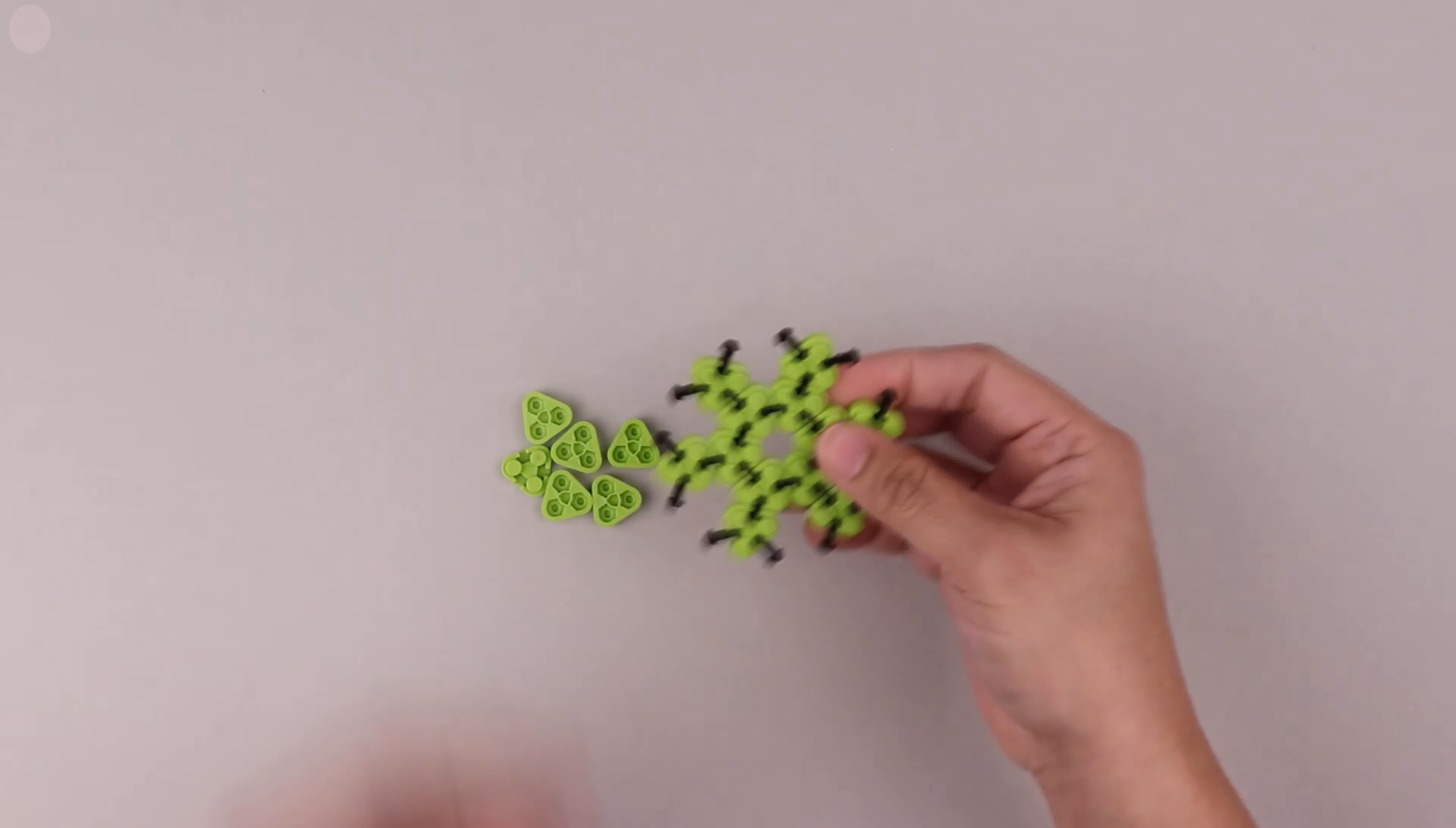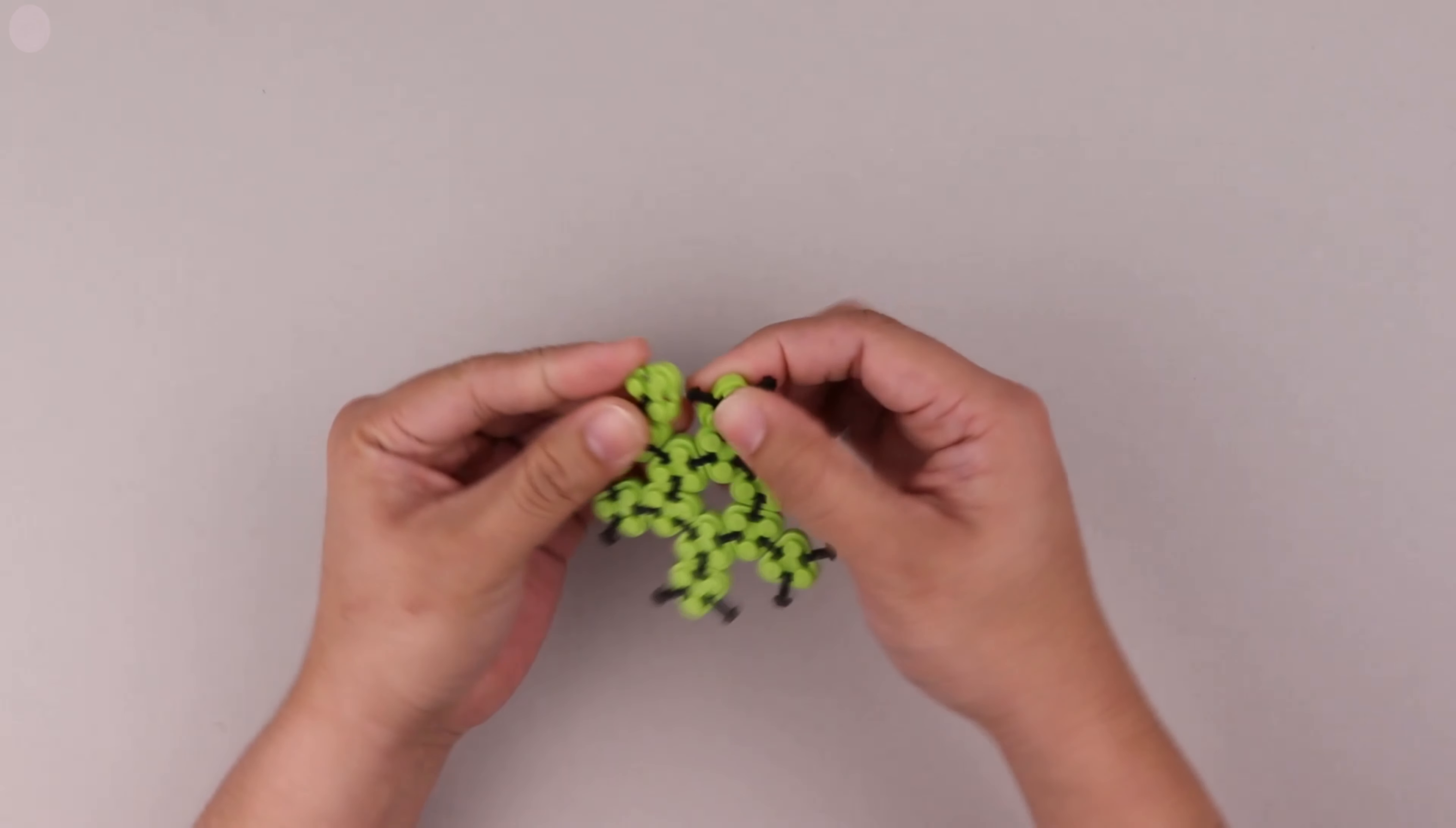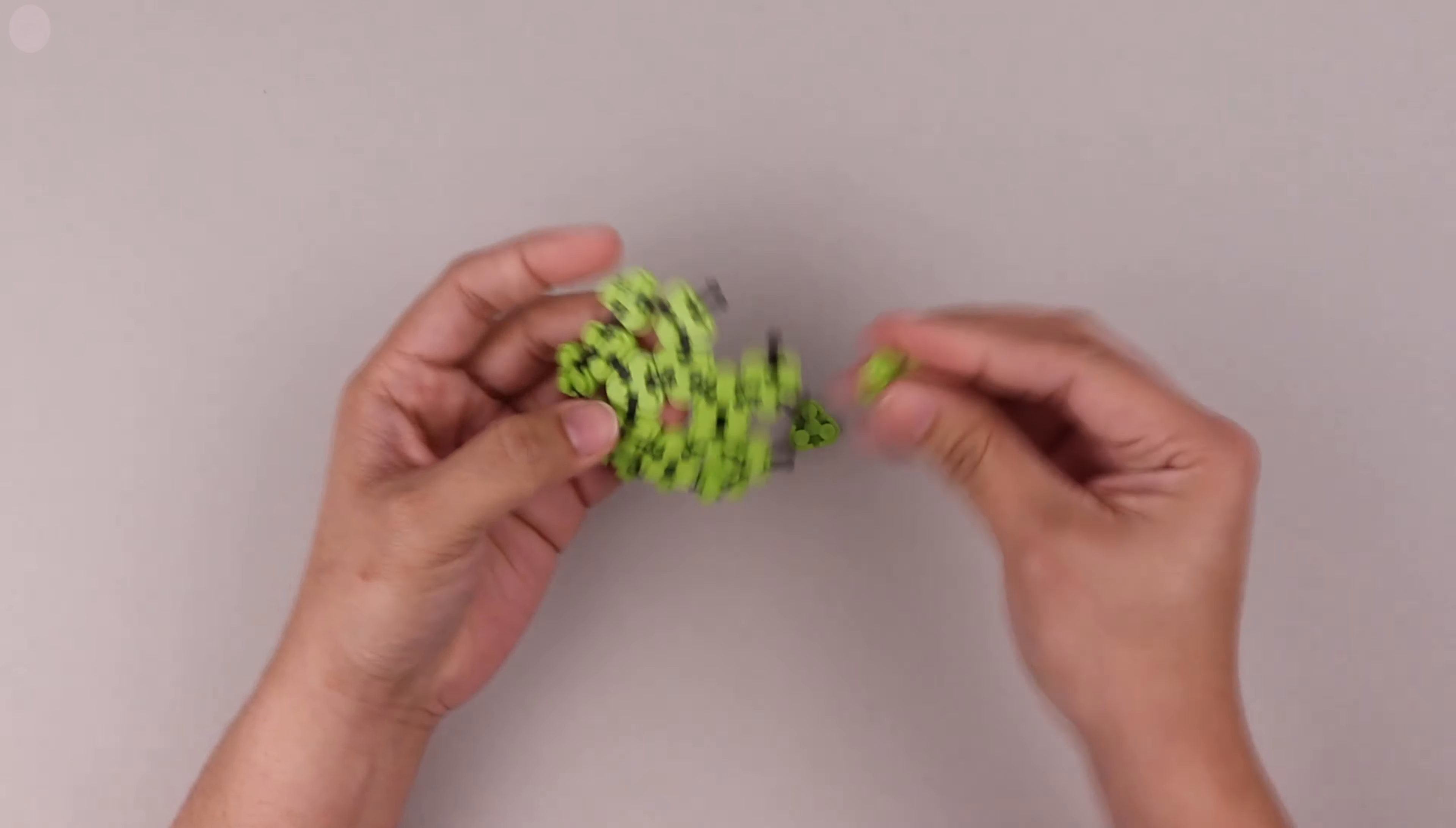Then you take more triangles and insert them in between these gaps, connecting the T5 tendons into them. You'll notice that it begins to curve as you work. This is the top of Octo's head beginning to form.